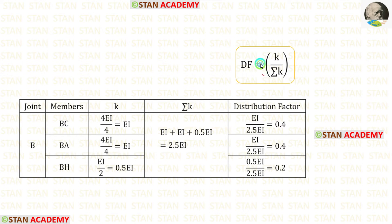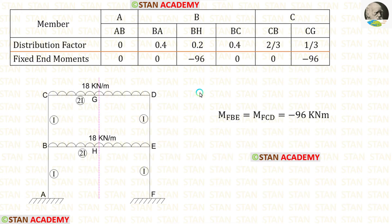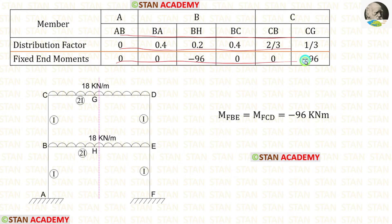Now, using this formula, let us find the distribution factors for joint B. Now let us start making the moment distribution table. In the table, first let us enter all of the members, then the distribution factors, then the fixed-end moments. The fixed-end moment for BE can be applied for BH, and the fixed-end moment for CD can be applied for CG.